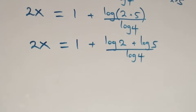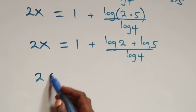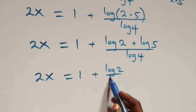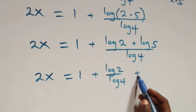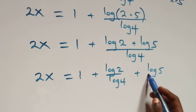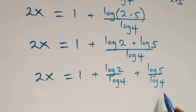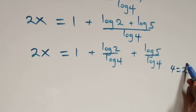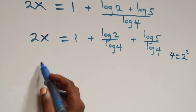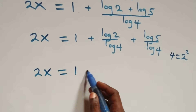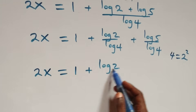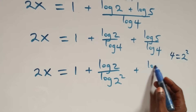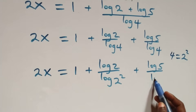From what we have here, we can express four as two times two, which is the same as two squared. Then what we have now becomes two x equals to one plus log two over log two squared, plus log five over log two squared.